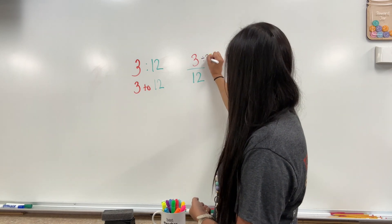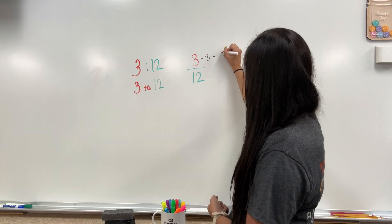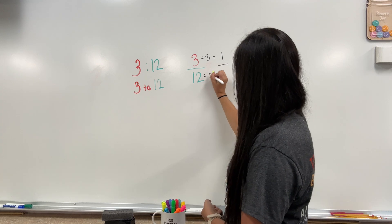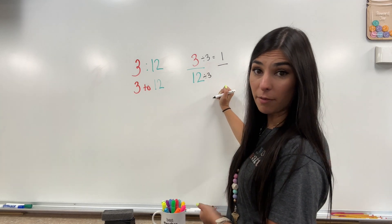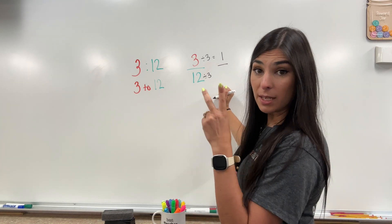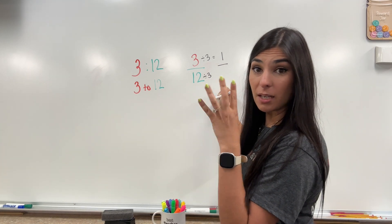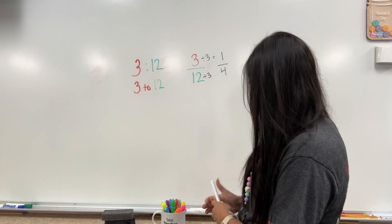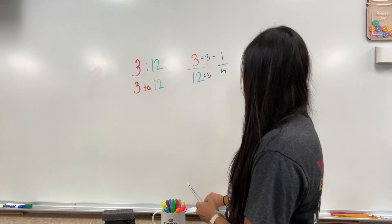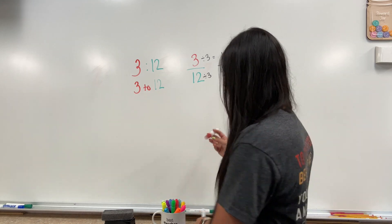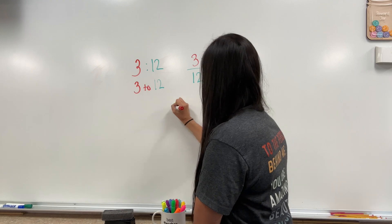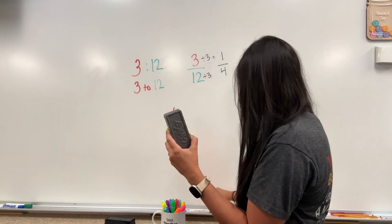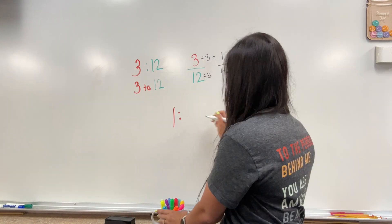Three goes into three one time. How many times does three go into 12? Four times. A better ratio would be for every one eraser that I have, I have four markers.